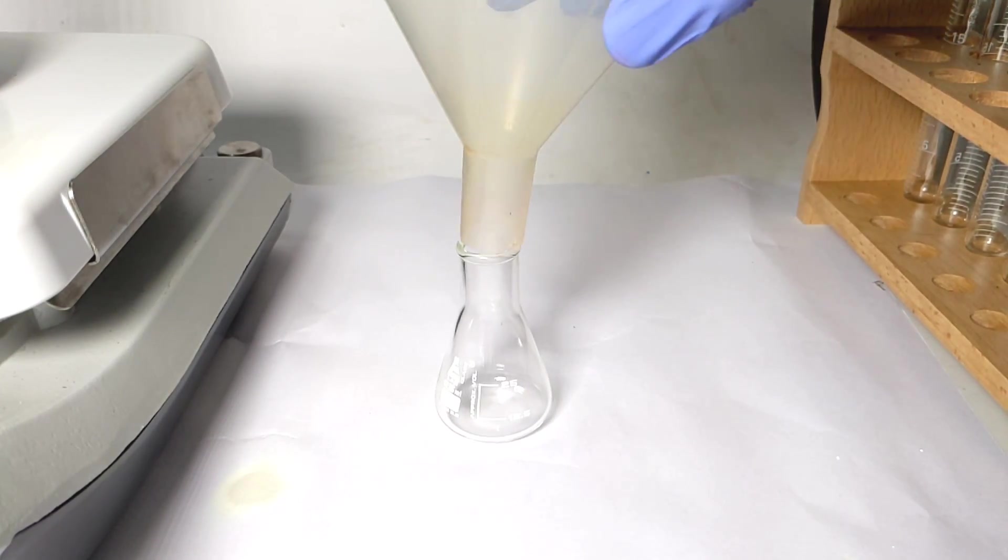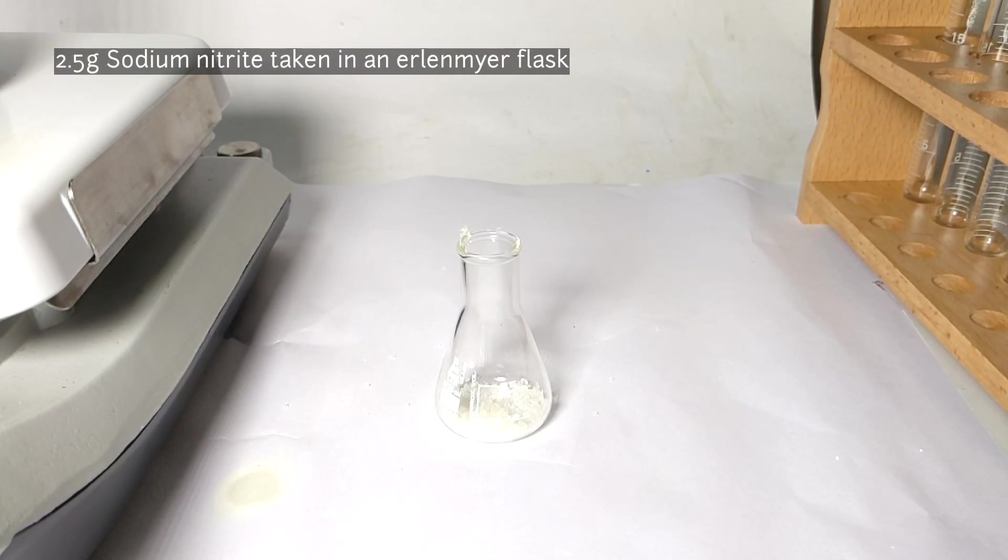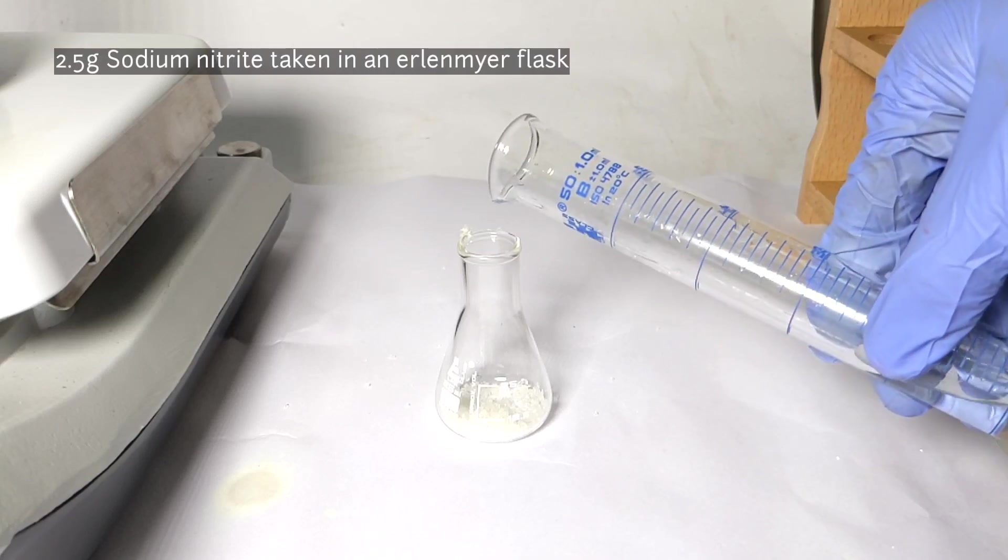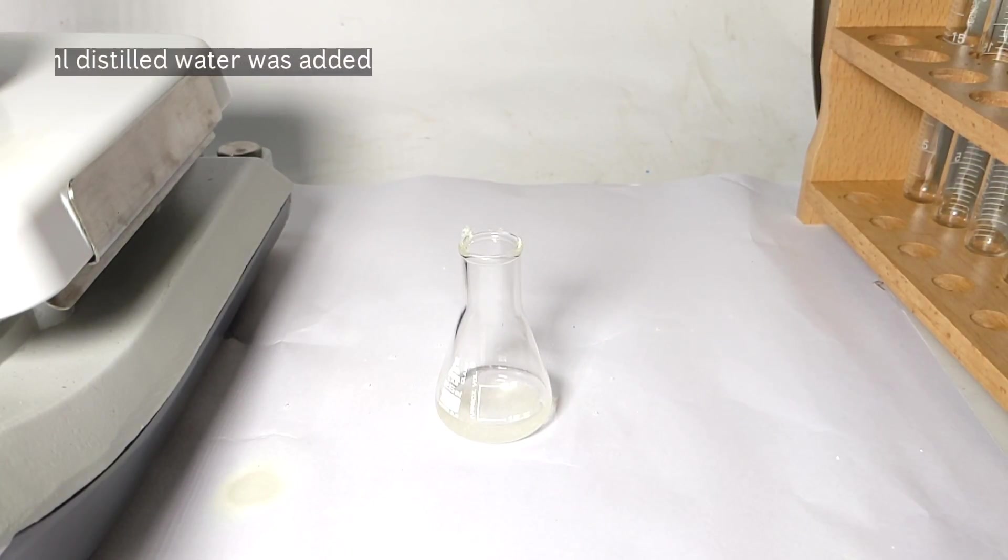Now take another small Erlenmeyer flask and add 2.5 grams of sodium nitrite. Remember that it is sodium nitrite and not sodium nitrate. Now add 9 milliliters of distilled water to dissolve the compound.